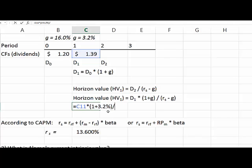We can go back to find our horizon value, which is 13.6 minus G. We're going to use the constant growth at 3.2%. So we find the horizon value or terminal value for this company at $13.81.